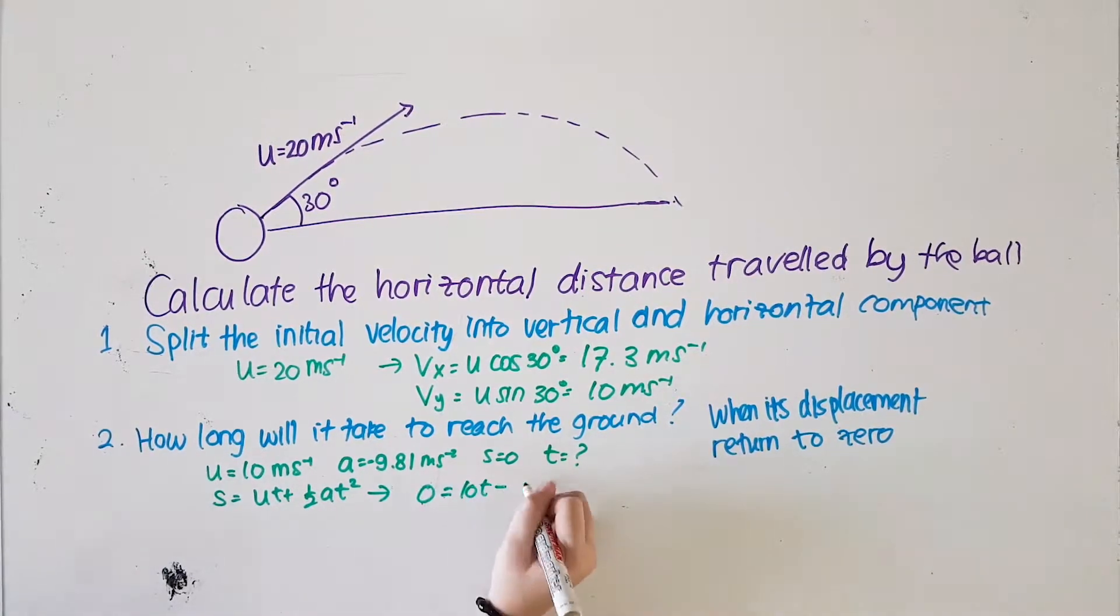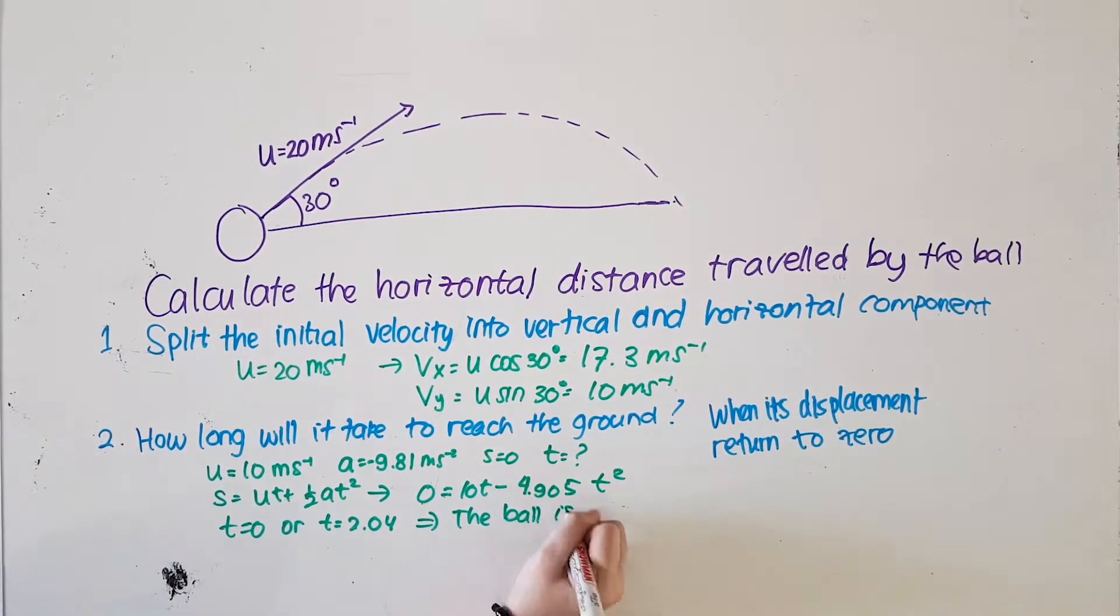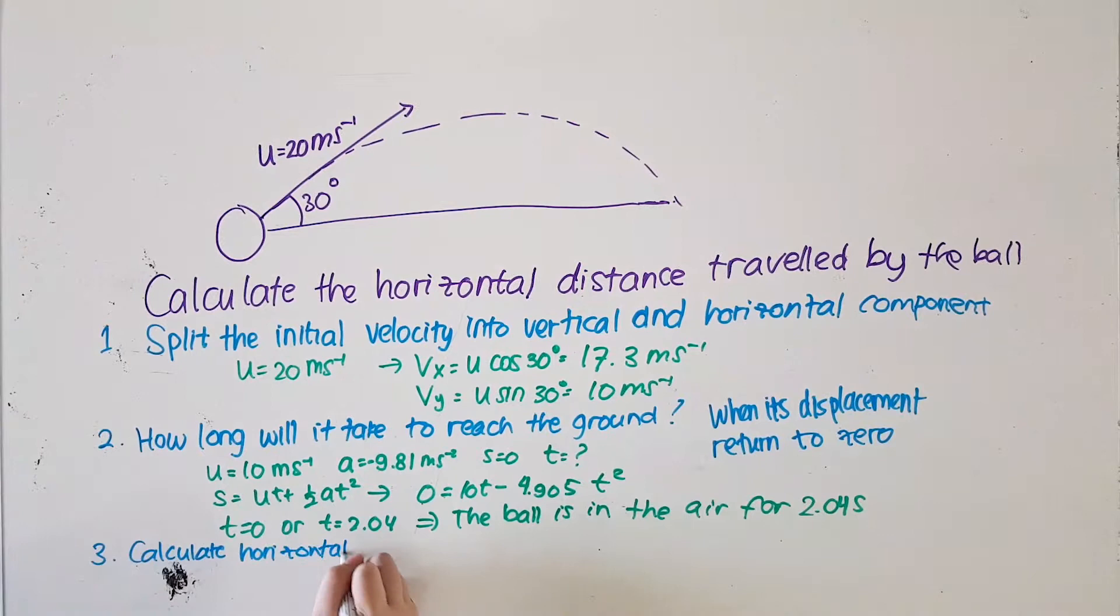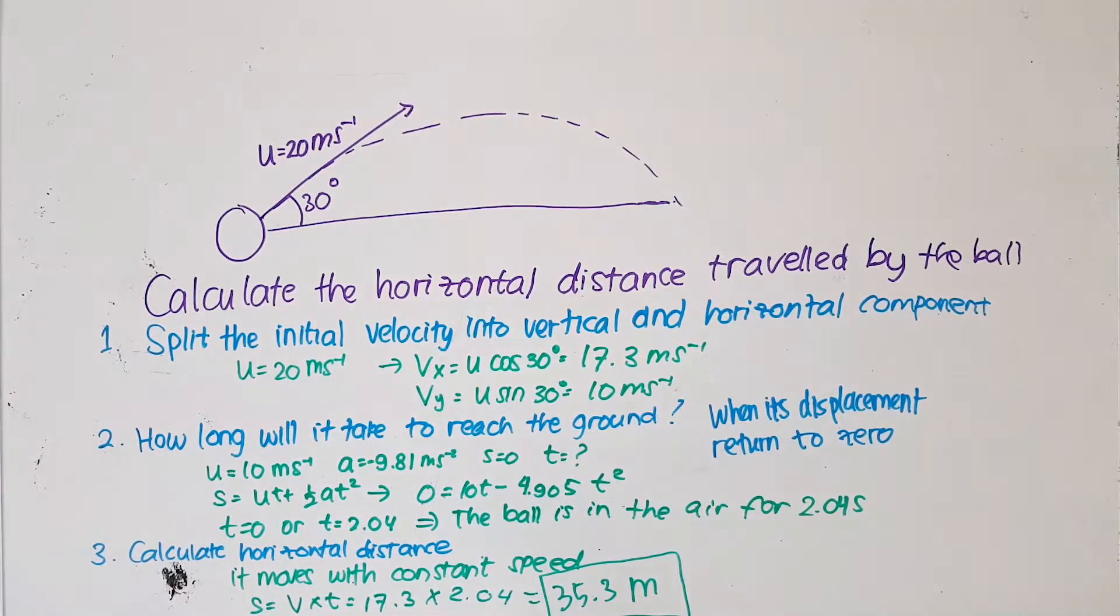Using distance equals initial velocity multiply by time plus 0.5 acceleration time square, we have 0 equals 10t minus 4.905t square. This will give t equals 0 second or t equals 2.04 second. Now we know that the ball is in the air for 2.04 second. We multiply 17.3 with 2.04 to get horizontal distance traveled by the ball which is 35.3 meter.